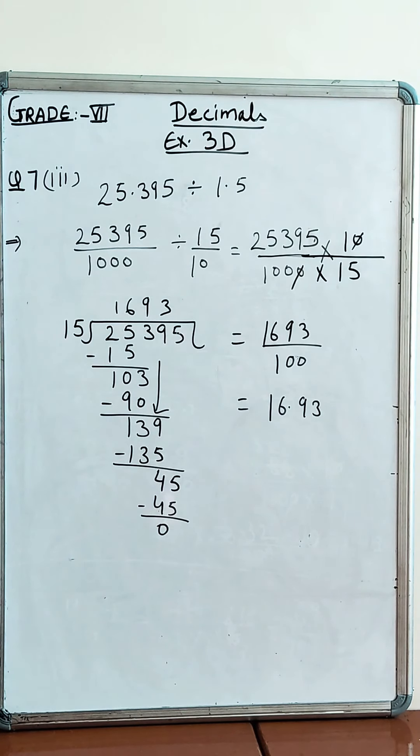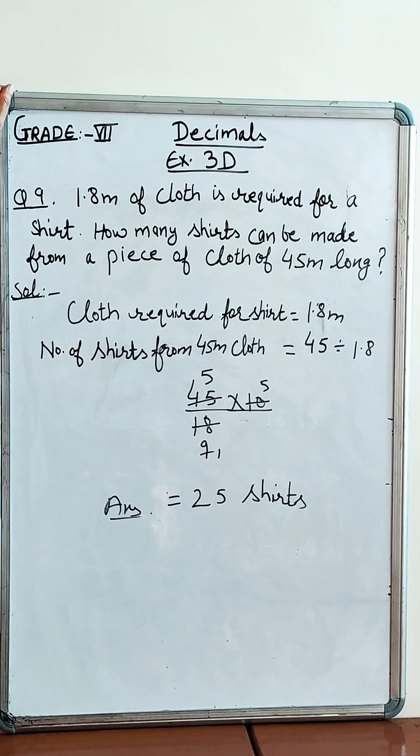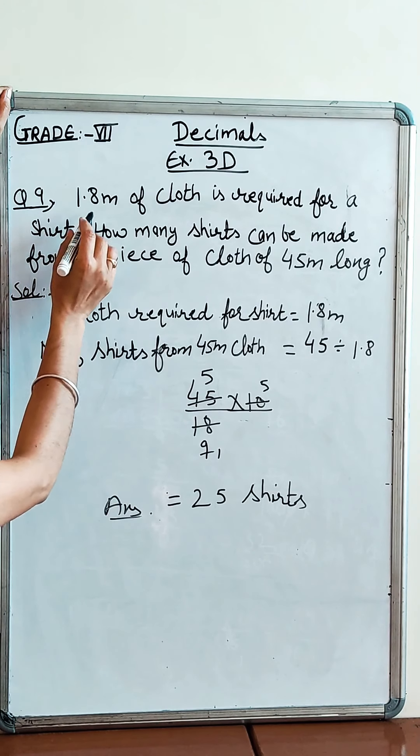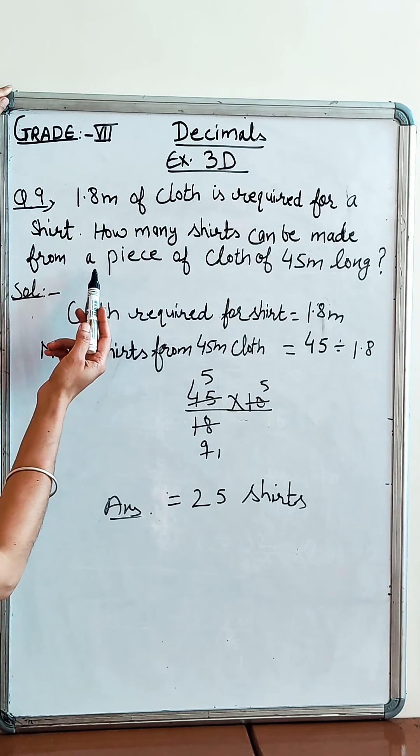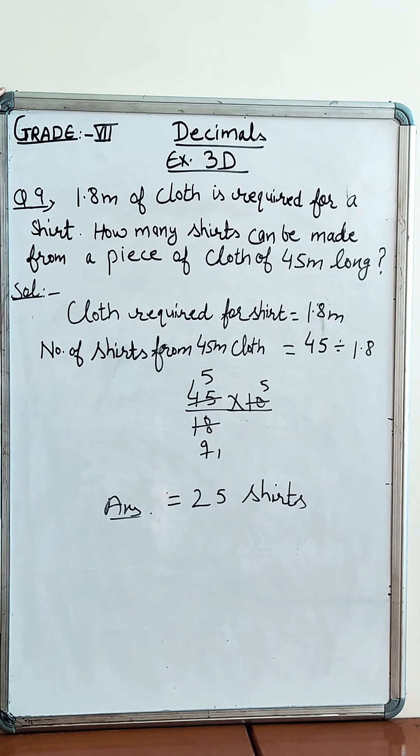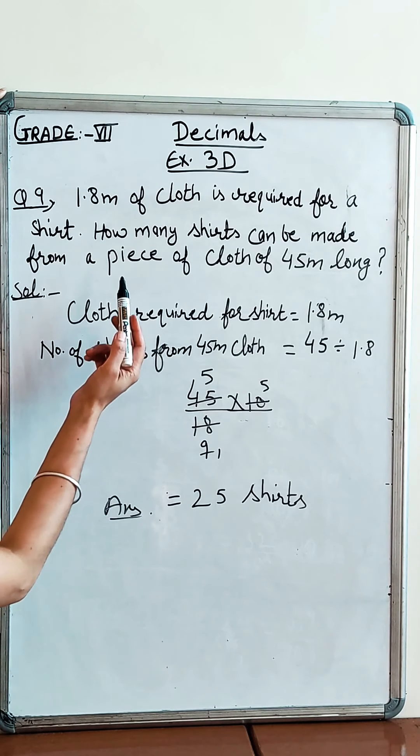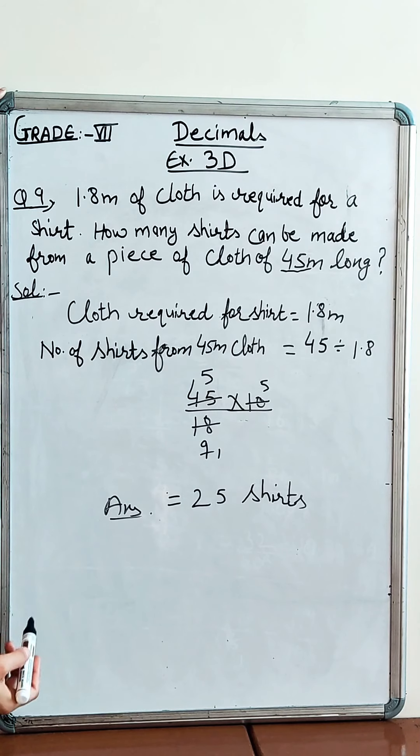Now let us start with the problem sums. Let us do question number 9. Question number 9 is: 1.8 meter of cloth is required for a shirt. How many shirts can be made from a piece of cloth 45 meter long? Now let us find out how many shirts can be made from 45 meter. Let us divide this.